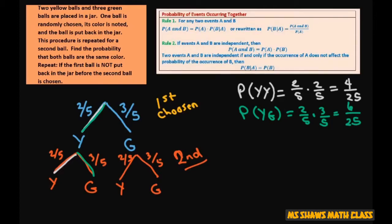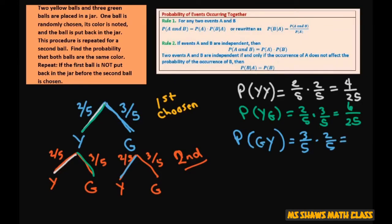Next, let's do green-yellow. The probability of green-yellow is three-fifths times two-fifths, and that also equals 6 over 25. And finally, the probability of green-green is three-fifths times three-fifths, which is 9 over 25.